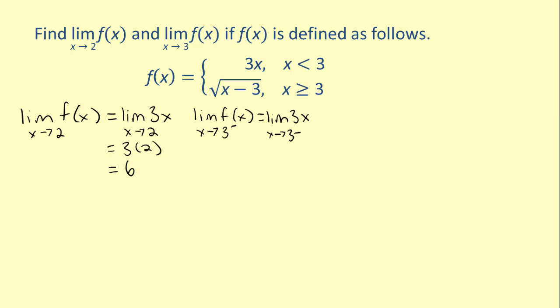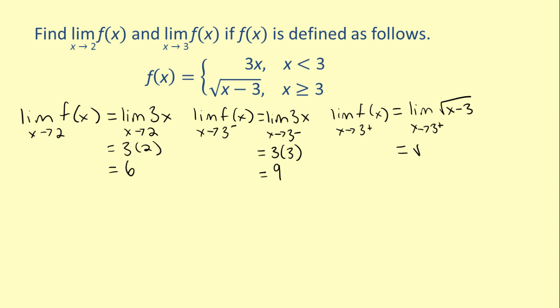Evaluating using substitution, we get that the limit is equal to 3 times 3, which is equal to 9. Now let's find the limit as x approaches 3 from the right. This time, x is greater than or equal to 3. So the limit of f(x) as x approaches 3 from the right is equal to the limit of the square root of x minus 3 as x approaches 3 from the right. Substituting, we get that the limit is equal to the square root of 3 minus 3, which is equal to 0.